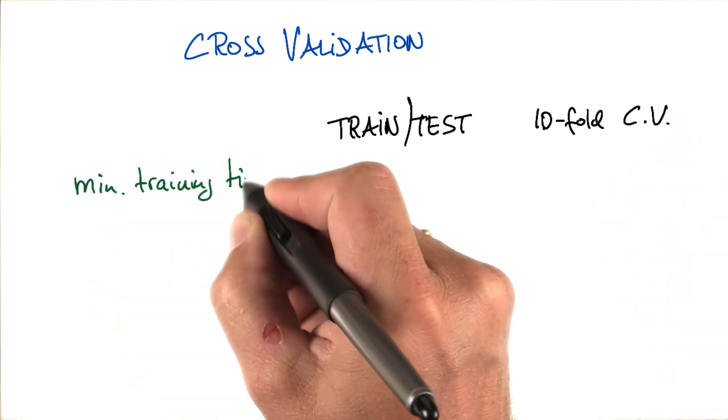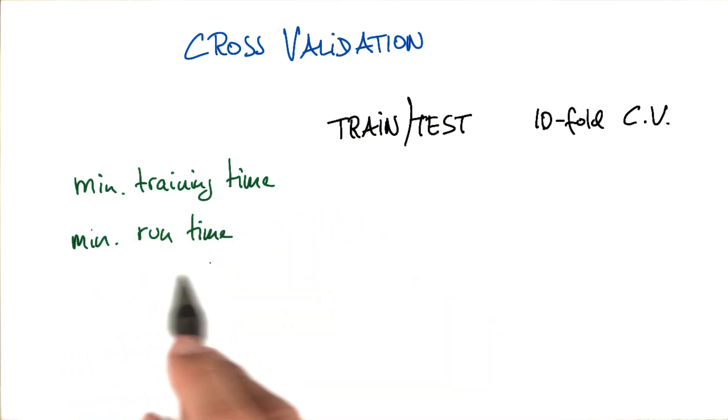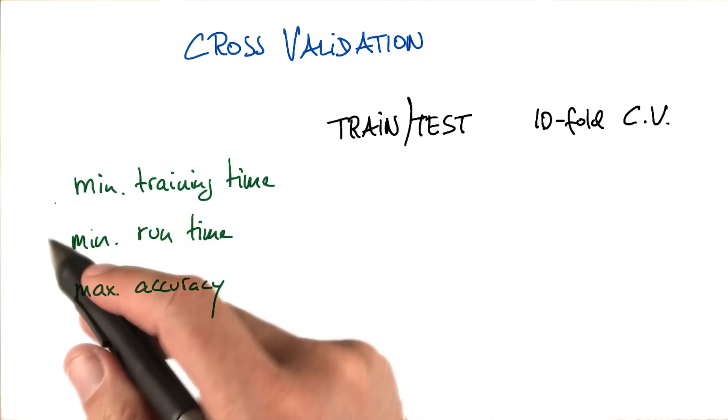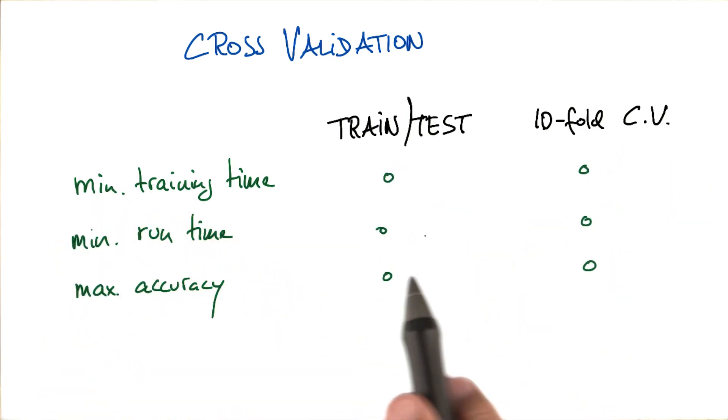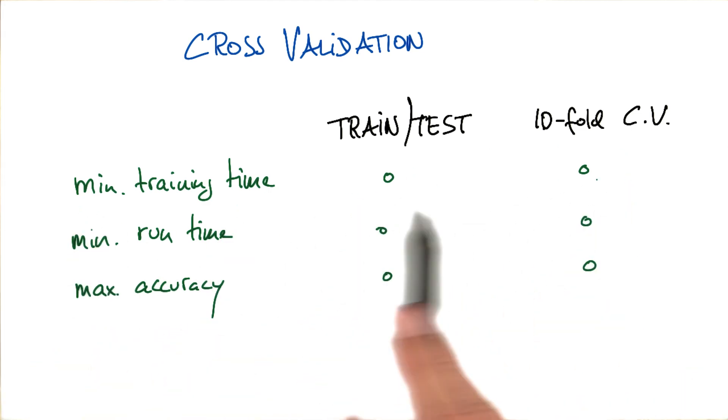And you really care about minimizing training time, minimize runtime after training, using your machine learning algorithm to output past the training time, and maximize accuracy. In each of these three situations, you might pick either train test or 10-fold cross-validation. Give me your best guess which one would you pick. So for each minimum training time, pick one of the two over here on the right side.